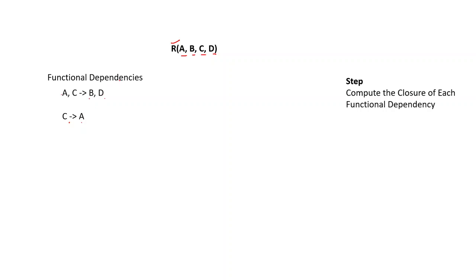Let us do the AC one first. The closure of AC will give you A and C due to the trivial functional dependency, and according to this condition it will also give you B and D. Now let us compute the closure of C gives A. C will give you C and A, and since AC gives you B and D and you have A and C, you will also get B and D.